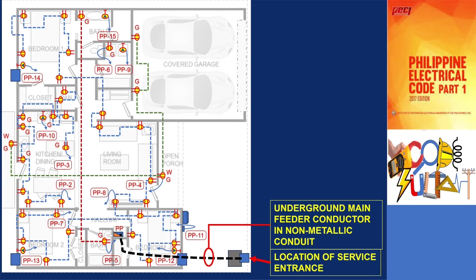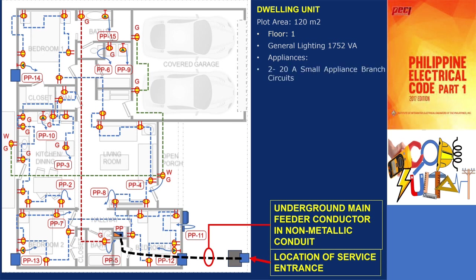Our sample project has a plot area of 120 square meters. Based on the calculations from the previous videos, the load breakdown is as follows. General lighting: 1,752 volt amperes, which includes receptacle outlets in general areas, bathroom circuits, garage circuits, and lighting loads. Small appliance branch circuits: two circuits at 1,500 volt amperes each. Laundry circuits: 1,500 volt amperes.